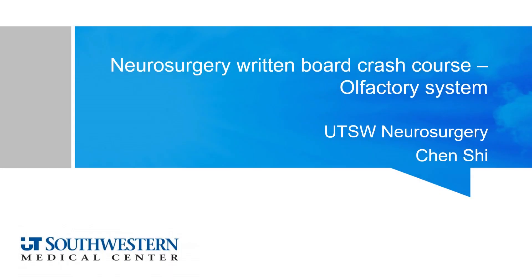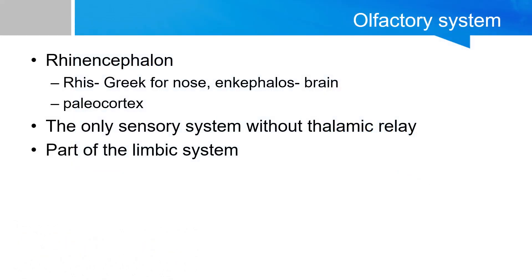Hello and welcome to Neurosurgery Written Board Crash Course. My name is Chen. Today we'll be going over the olfactory system. The olfactory cortex is also called the rhinencephalon. 'Rhin' is Greek for nose and 'encephalon' is Greek for brain, and hence the name rhinencephalon — nose brain.